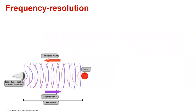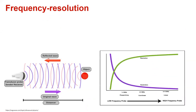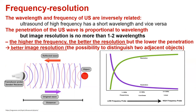If the transducer probe sends a signal to an object, it will reflect the wave. If we increase the frequency of the probe, we can reach better resolution but we will lose penetration. The wavelength and the frequency of ultrasound are inversely related. Ultrasound of higher frequency has a shorter wavelength and vice versa. The penetration of ultrasound is proportional to the wavelength, but image resolution is no more than one to two wavelengths. So the higher the frequency, the better the resolution, but the lower the penetration.